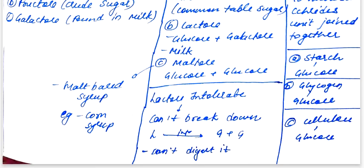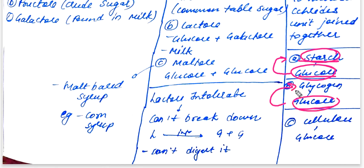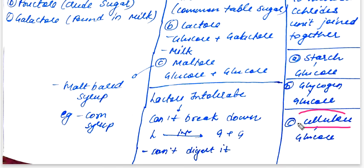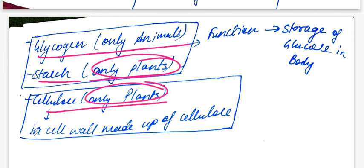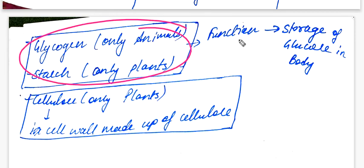Polysaccharides include starch, glycogen, and cellulose. Glucose is stored in plants in the form of starch, and in the animal body glucose is stored in the form of glycogen. The cell wall is made of cellulose. All these polysaccharides are made of glucose only. Glycogen is found only in animals, starch only in plants, and cellulose only in plants.